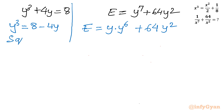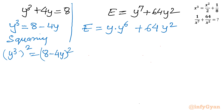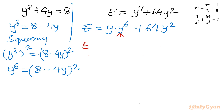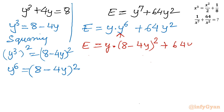Now consider squaring both sides of y³ = 8 − 4y. We get (y³)² = (8 − 4y)². Using the exponent law (aᵇ)ᶜ = aᵇᶜ, we get y⁶ = (8 − 4y)². Substituting this value of y⁶ into the expression: E = y·(8 − 4y)² + 64y².